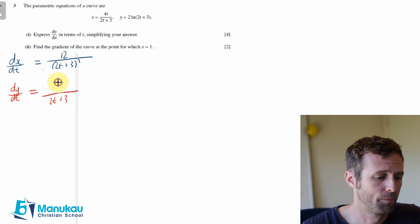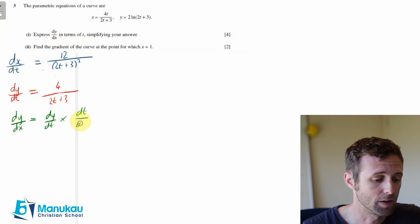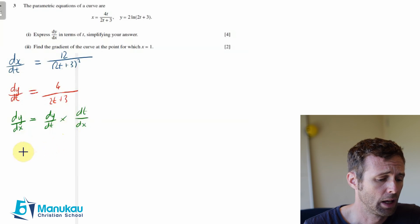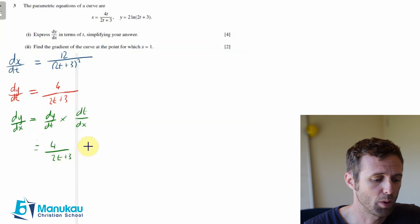Now the last step in finding dy/dx—this is kind of like a chain rule—dy/dx equals dy/dt multiplied by dt/dx. You can see the cancelling here. So dy/dt is 4 over (2t plus 3), and we're going to multiply that by dt/dx. Now that is simply the reciprocal of this one here: (2t plus 3) squared over 12.